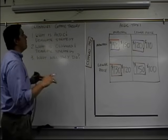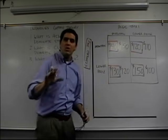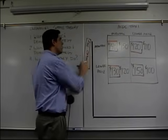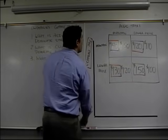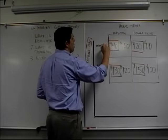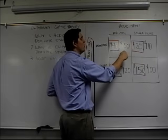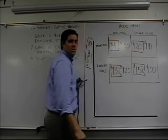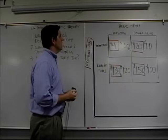What is ACDC's dominant strategy? Well, ACDC is the ones here, the ones on the right. Which one should they do regardless of what Clifford Taxi does? Let's find out. Take a look. If Clifford Taxi decides to maintain, what should ACDC Taxi do? Should they maintain and get 150 or should they get 110? Well, they should definitely go for 150. No doubt about it. That makes sense to me.